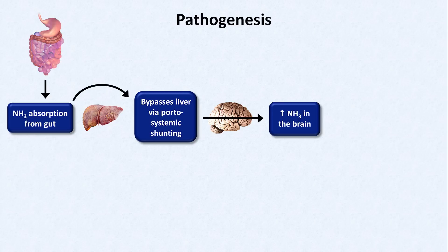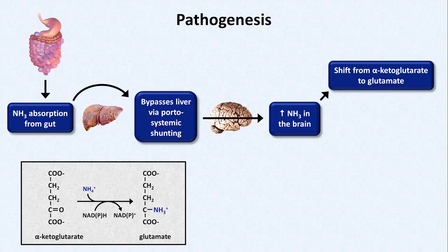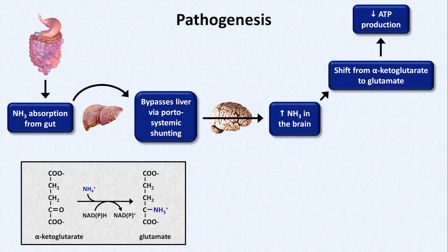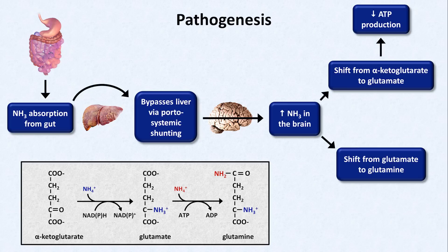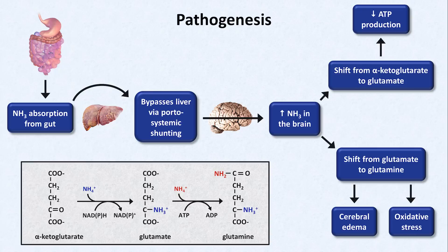This shifts the equilibrium in two critical enzyme-mediated reactions. First, it shifts the balance between the citric acid cycle intermediate alpha-ketoglutarate and the neurotransmitter glutamate towards the latter. Among other things, this results in a decrease in cellular oxidation and ATP production. The second reaction is one in which glutamate and ammonia are converted to the amino acid glutamine, specifically within astrocytes. For complex reasons, this results in cerebral edema and oxidative stress.